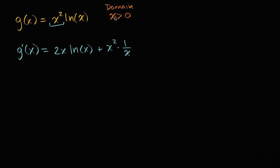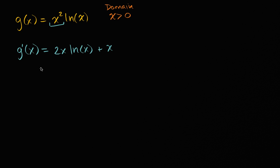We can rewrite that last term: x squared times one over x. Since x is positive in our domain, x squared divided by x is just x. So g prime of x equals two x times the natural log of x plus x. Now let's think about the critical points.